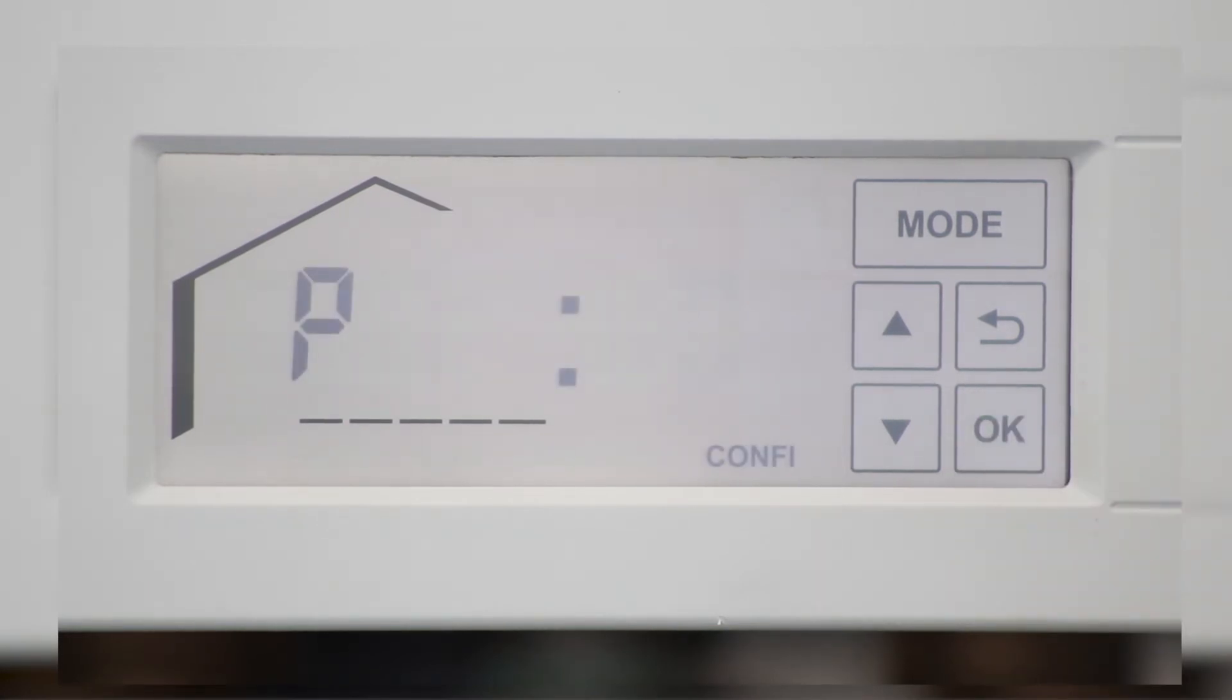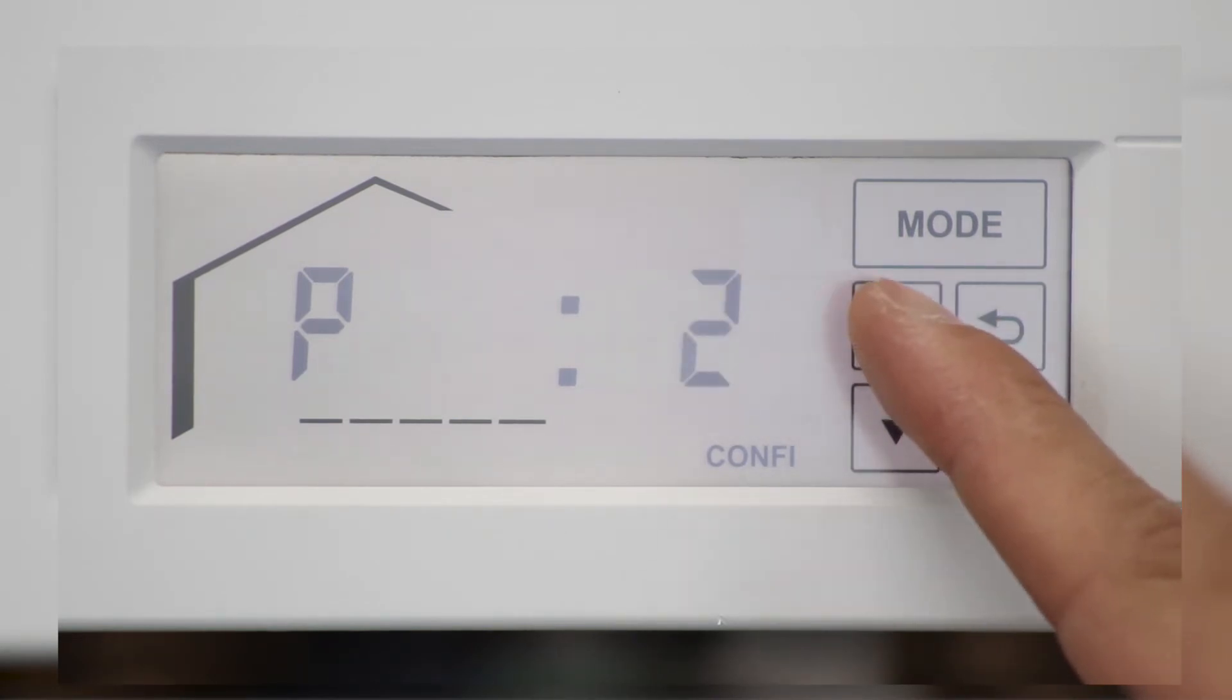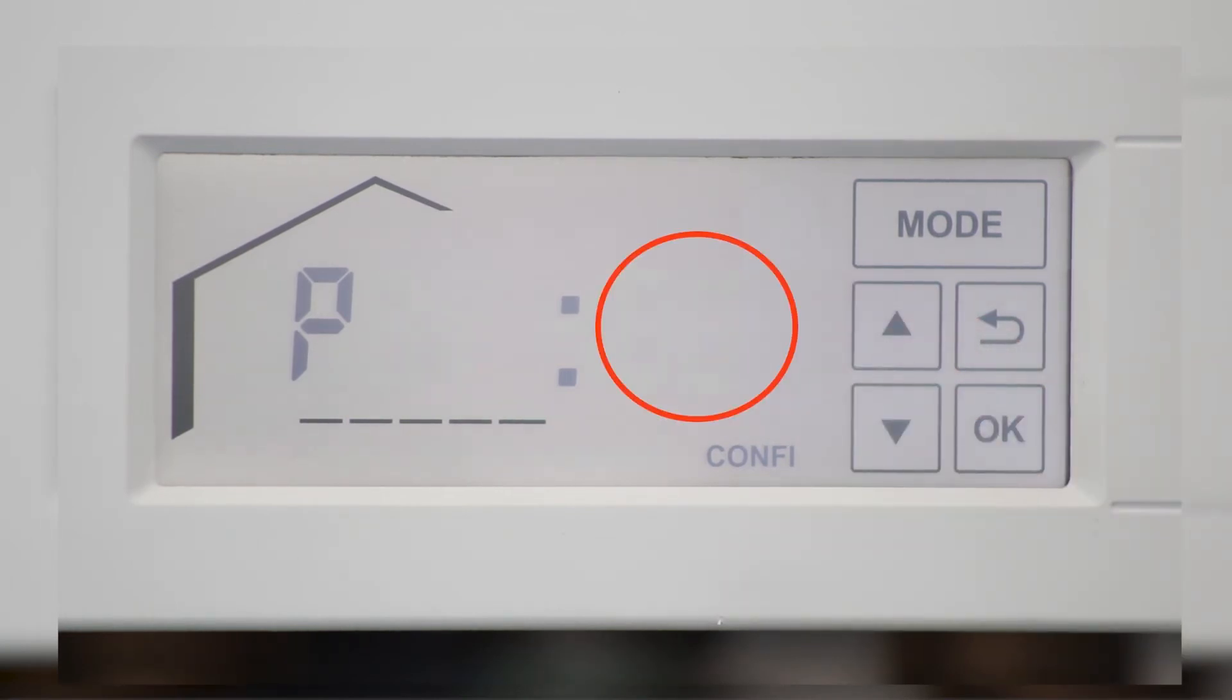P0 will be displayed on the boiler control. Press the up arrow until you reach P12 and press ok. You have now entered system coding.